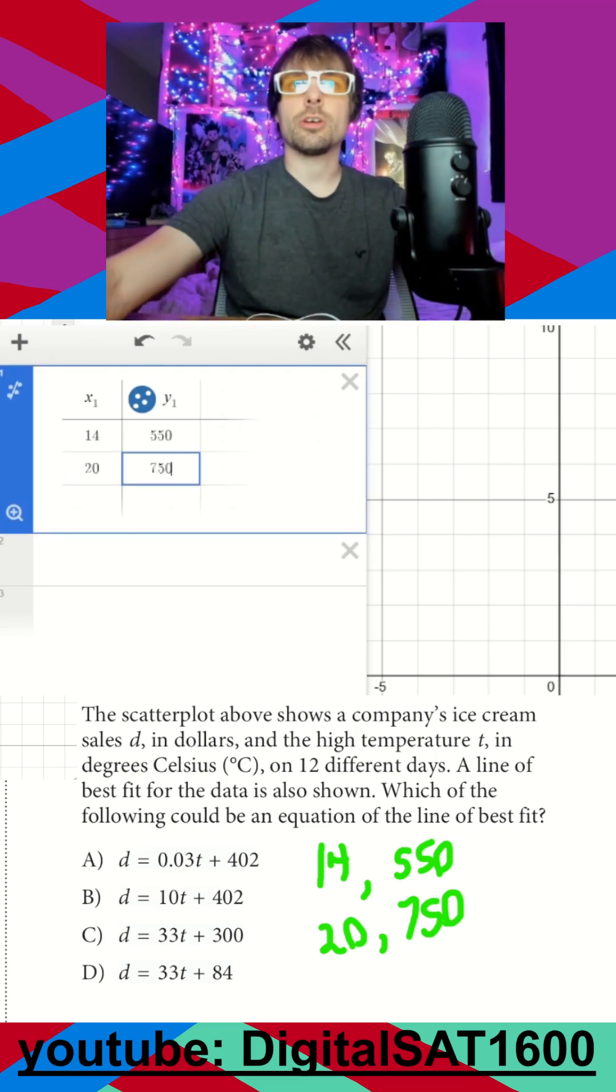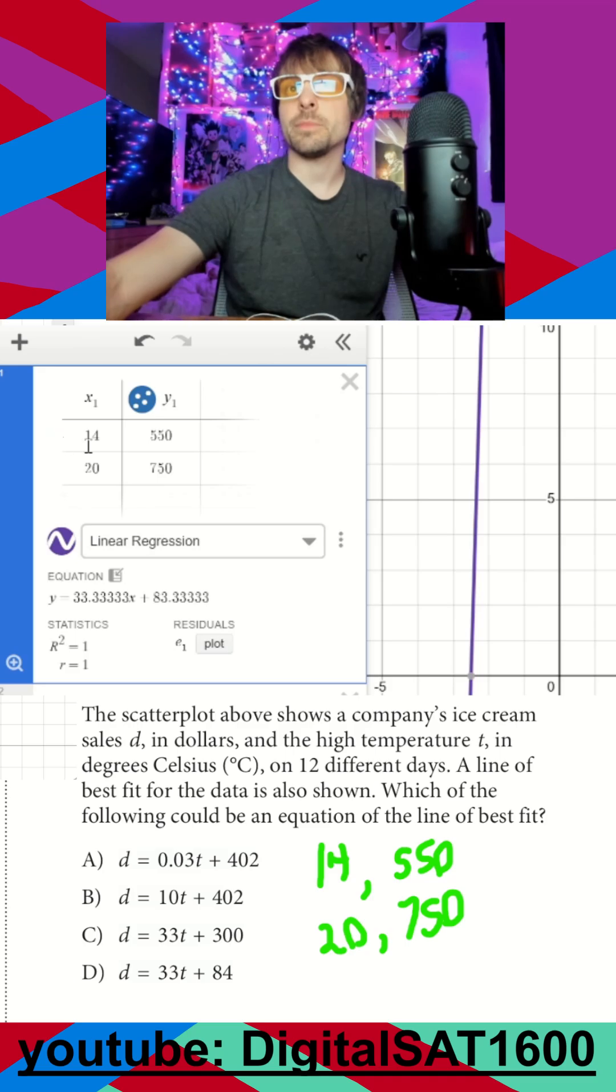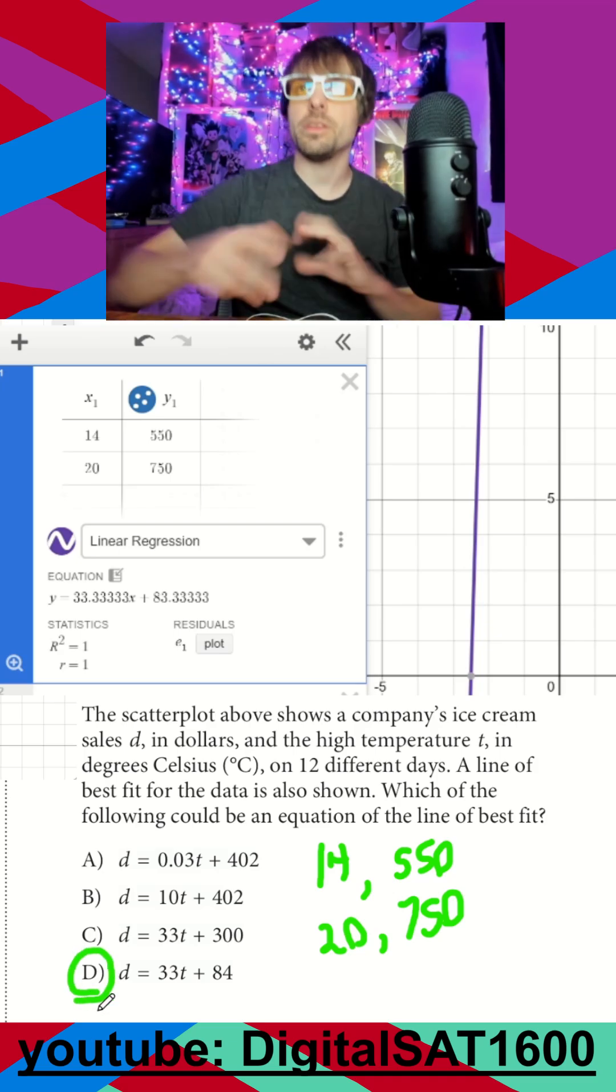And then we just click our regression button here. This is definitely going to be linear and here's our equation right here. It looks like 33t plus 83 and I look through my answers and again all they're looking for is the one that matches our graph.